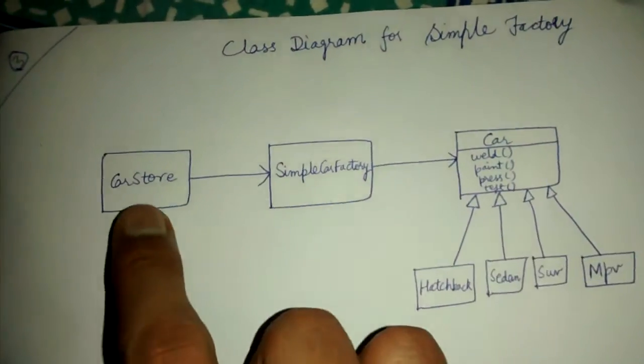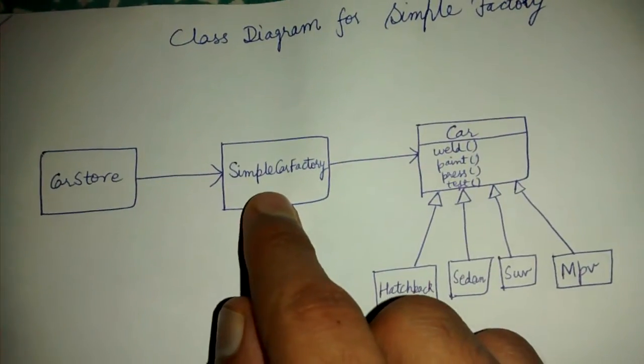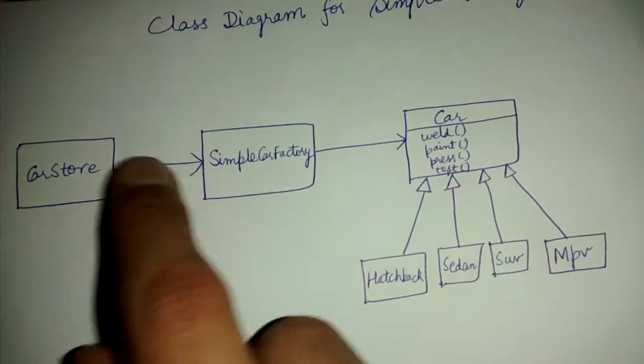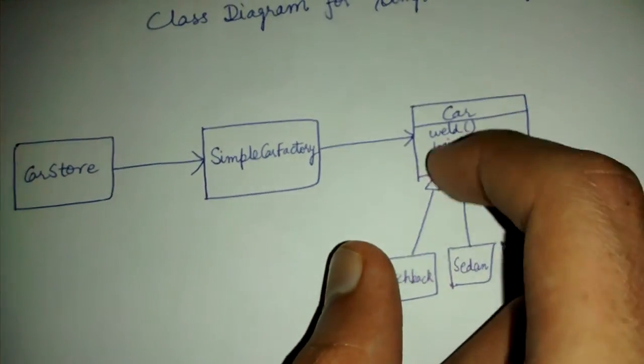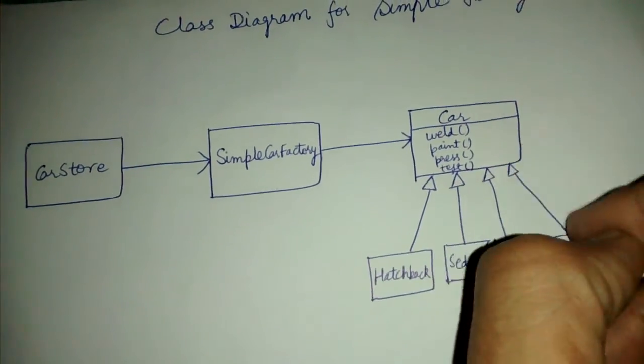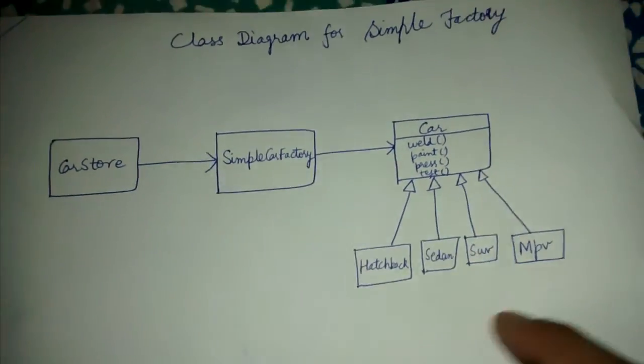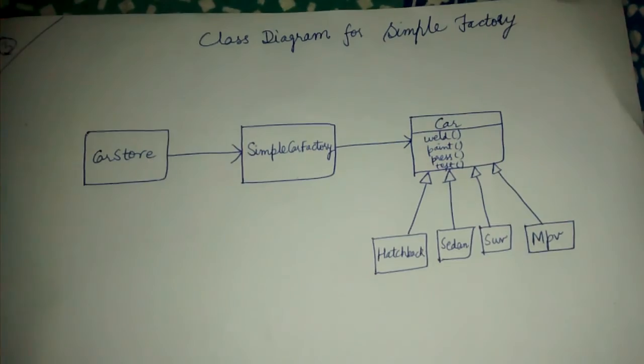Let's now quickly look at the class diagram, which is very simple. CarStore will talk to the factory, and it will actually create the car object for it, which can be any one of them. This is inherited by all four. Thank you, friends.